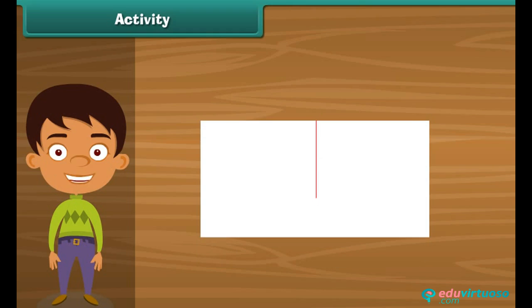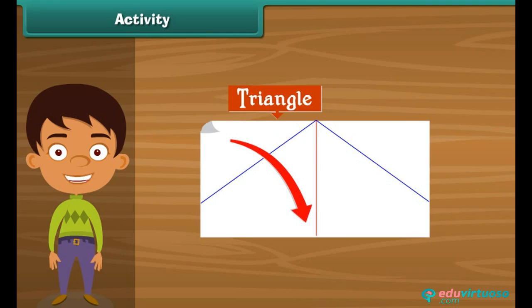First, fold down the upper half of the sheet from the red line, then unfold it. Now what you see is a line in the middle of the paper, right? Next, we fold both upper triangles on the red lines as shown.